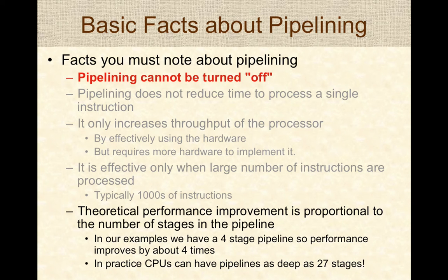The theoretical performance improvement of a pipeline is proportional to the number of stages. A four-stage pipeline increases performance by four times. In practice, CPUs can have very deep pipelines — some have up to 27 stages — breaking instruction processing into very small steps and overlapping execution to significantly increase throughput.